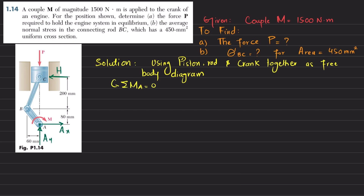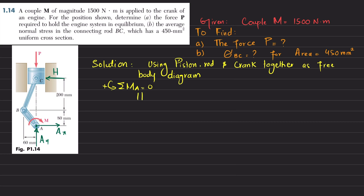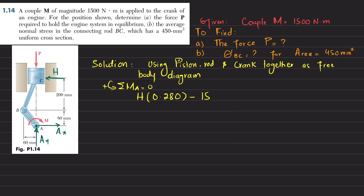The first equation of equilibrium: sum of all moments about point A equals zero, taking counterclockwise moment as positive. The reaction forces A_x and A_y do not produce moment because they pass through point A, and the force P also passes through A. The only force producing a moment is the horizontal force H times the perpendicular distance, which is 200 plus 80 = 280 millimeters (0.280 m). H × 0.280 minus M = 0, so H = 1500 / 0.280 = 5357.1 N.